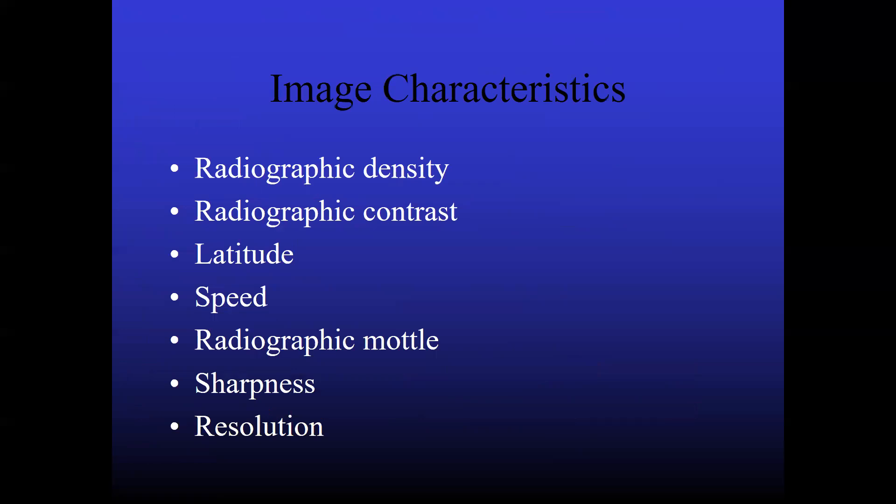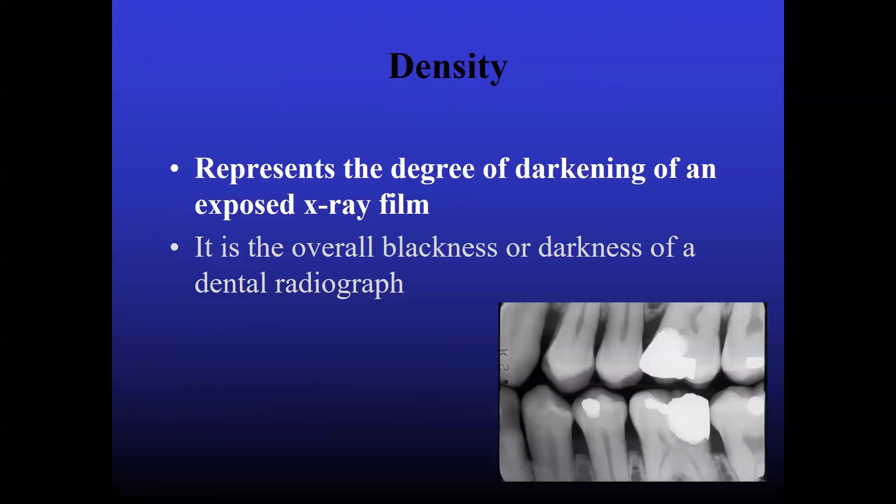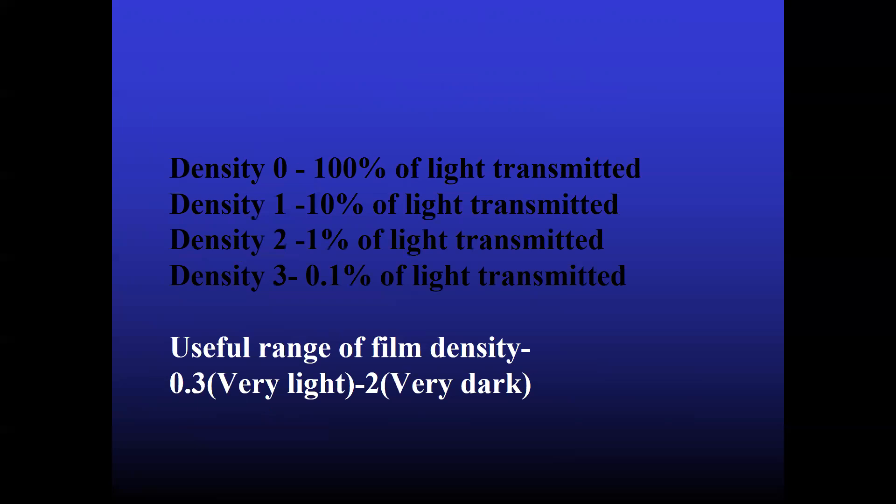So let's go into the image characteristics. It basically contains radiographic density, radiographic contrast, latitude, speed, radiographic mottle, sharpness and resolution. So what is radiographic density? Density is the degree of darkening of an exposed x-ray film. That is, it is the overall blackness or darkness of a dental radiograph. Density 0 means 100% of the light is transmitted. Density 1 means 10% of the light is transmitted. Density 2 means 1% of the light is transmitted. Density 3 means 0.1% of the light is transmitted. So a useful range of film density, it is 0.3 that is very light to 2 which is very dark. So it should be in between this range, so the density will be adequate.